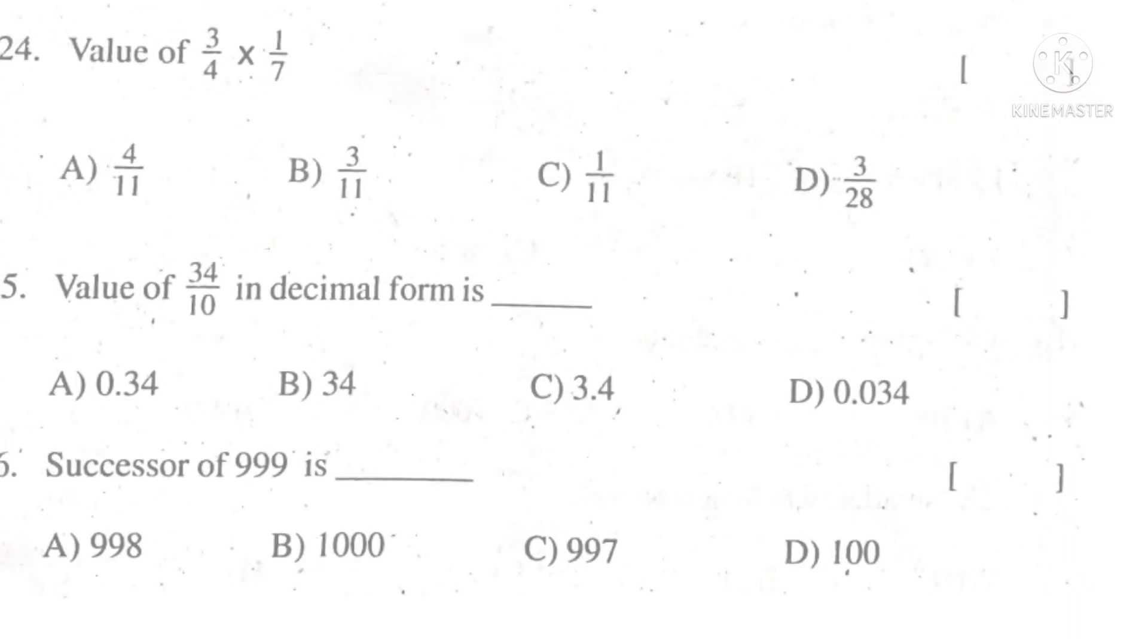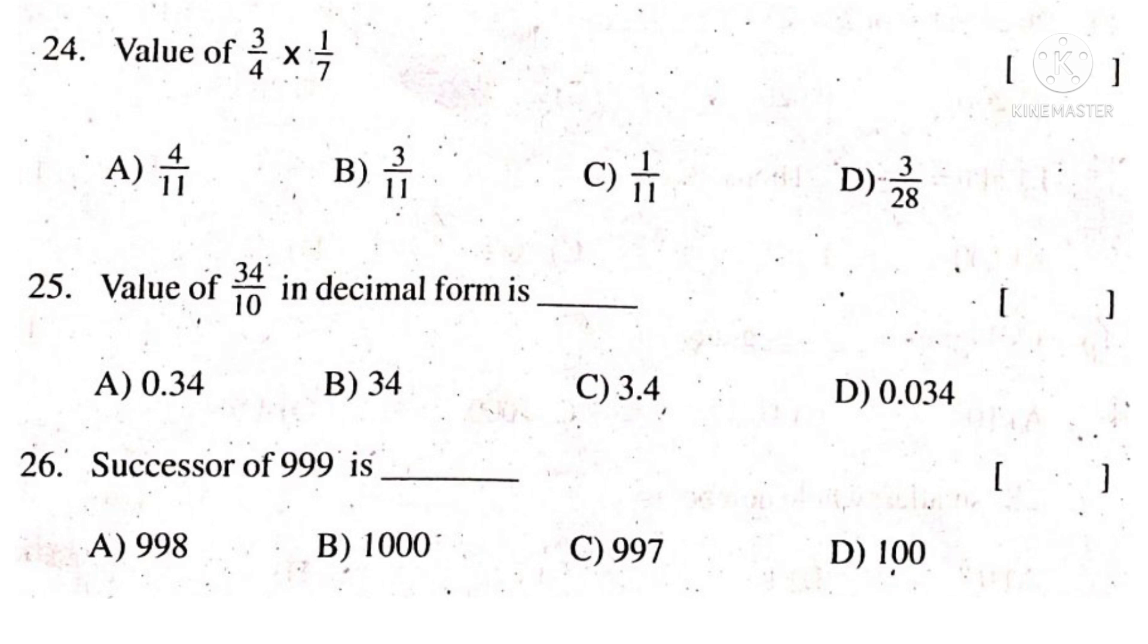24th question: value of 3 by 4 into 1 by 7. Multiplying the numerator 3 into 1 is 3, denominator 4 into 7 is 28. The correct choice is D. Value of 34 by 10 in decimal form is - observe that there is only 1 zero in the denominator, so put a decimal point counting from right side to left side after one digit. That is 3.4. The correct choice is C.